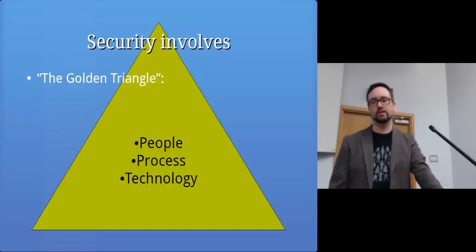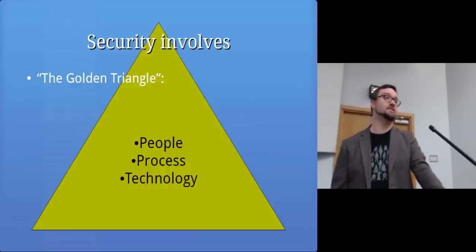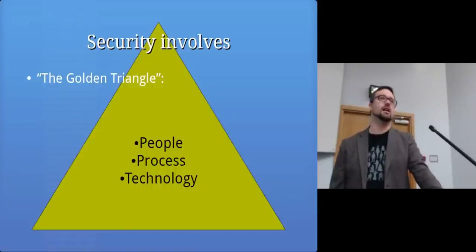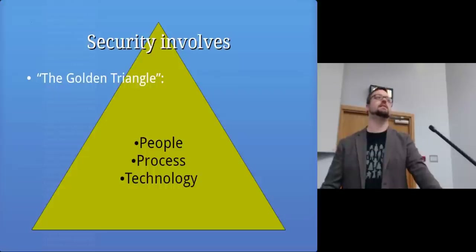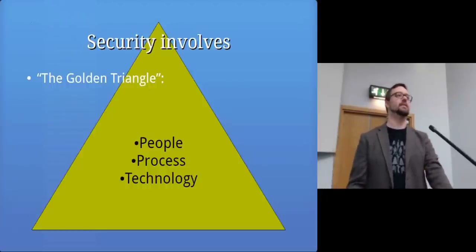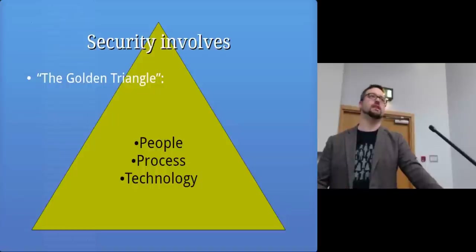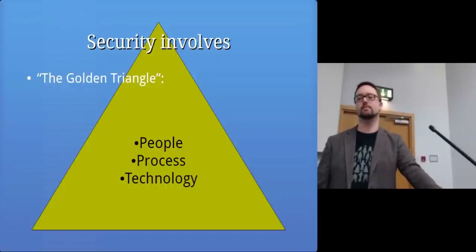There's something known as the golden triangle, which says that security involves three things. First, people — are the people doing things that make sense for security? Second, process — do you have the procedures in place to ensure you will continue to be secure? And third, technology — do we have the right things in place? If we're using various products, do they have security vulnerabilities? Have they got all the latest security fixes applied? Are we using technology to enforce security policies?